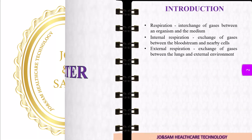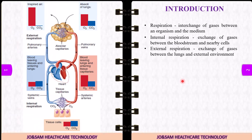Our lungs are the main organs for O2 and CO2 exchange. If this pulmonary function is not properly identified, and if there is a pulmonary impairment, we use this spirometer.